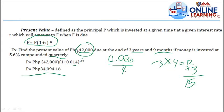Present value defined as the principal P which is invested at a given time t at a given interest rate R which will amount to F when F is due. So P equals F times 1 plus i raised to negative n. Why is it negative? Because it's present, current. Earlier with future it was positive n. Example: find the present value of 42,000 due at the end of 3 years and 9 months if money is invested at 5.6% compounded quarterly. So if this is my investment value after 3 years and 9 months, how much should I deposit now at 5.6% compounded quarterly?